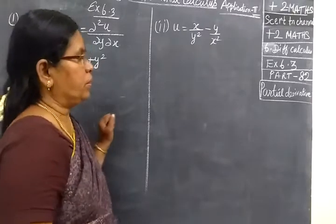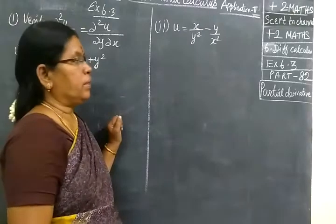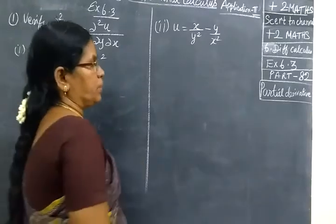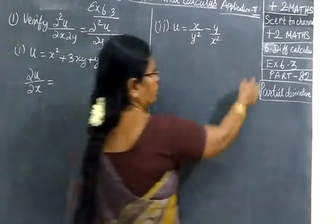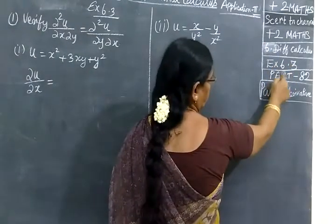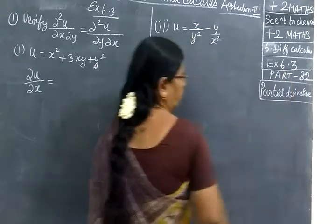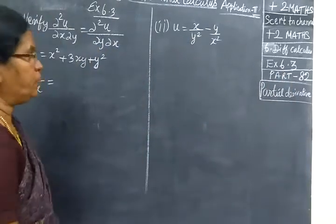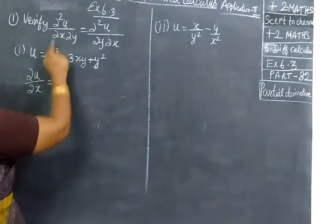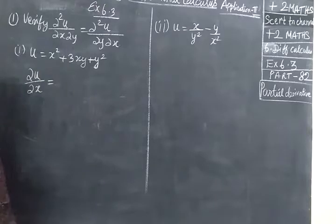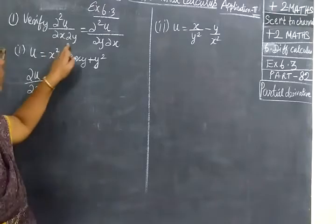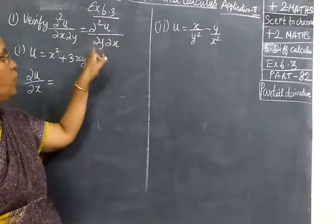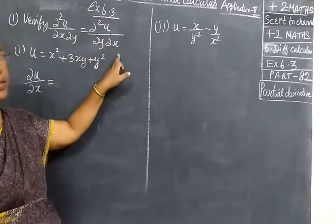Now we will see exercise 6.3, partial derivative form. Verify that ∂²u/∂x∂y equals ∂²u/∂y∂x.